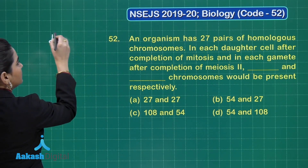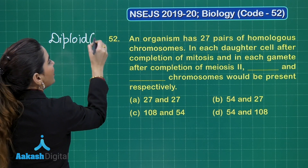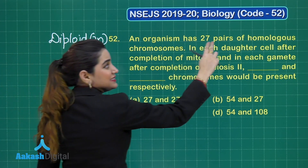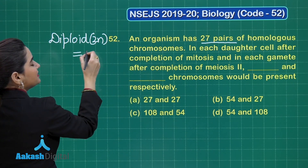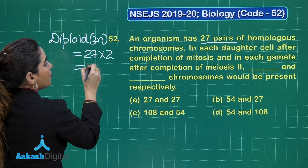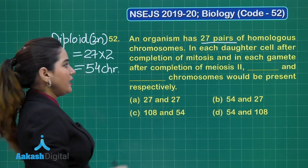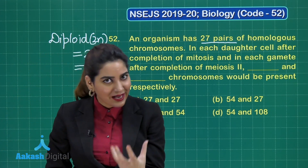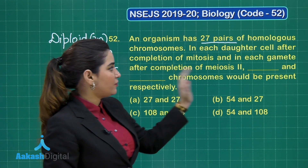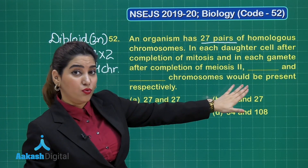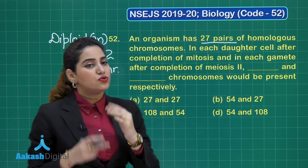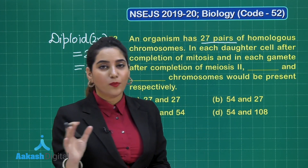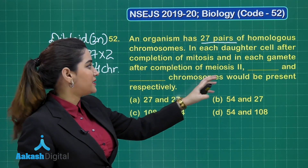The diploid condition, or 2N condition: 27 pairs means 27 × 2 = 54 chromosomes in total. The question asks: in each daughter cell after completion of mitosis, and in each gamete after completion of meiosis 2, how many chromosomes will be present respectively? So we need to find the chromosome number after mitosis and after meiosis 2, given that 2N = 54.